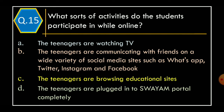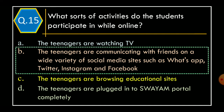Question 15: What sorts of activities do students participate in while online? Option A: The teenagers are watching TV. Option B: The teenagers are communicating with friends on a wide variety of social media sites such as WhatsApp, Twitter, Instagram and Facebook. Option C: The teenagers are browsing educational sites. Option D: The teenagers are plugged into the Swim portal completely. The correct option is Option B: The teenagers are communicating with friends on social media sites such as WhatsApp, Twitter, Instagram and Facebook.